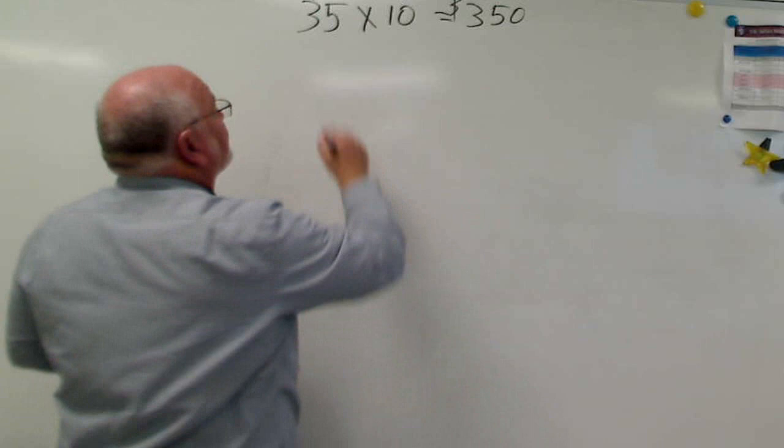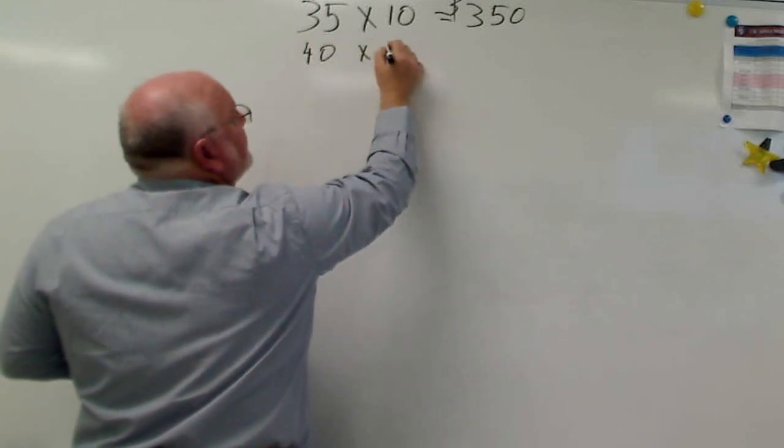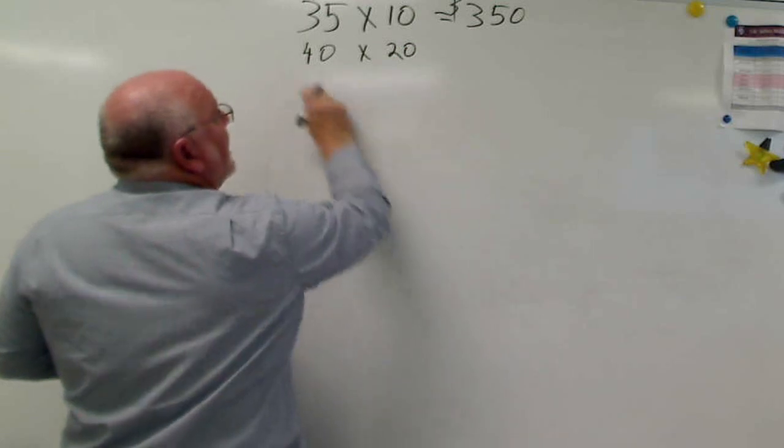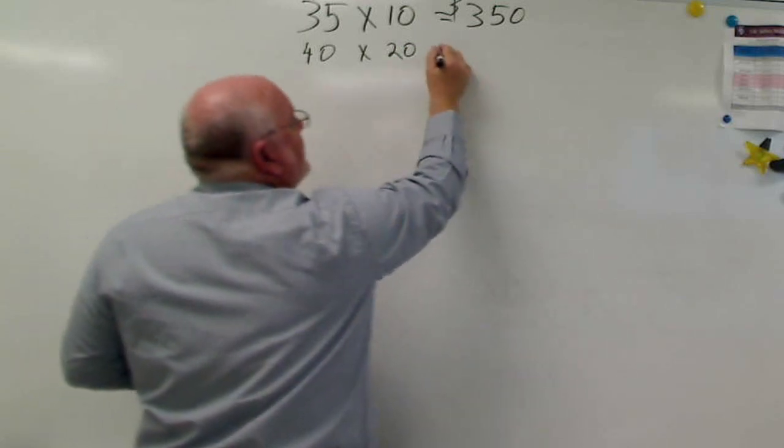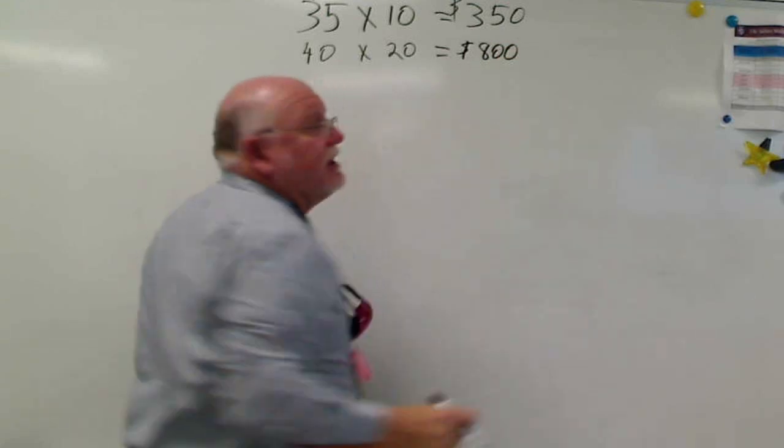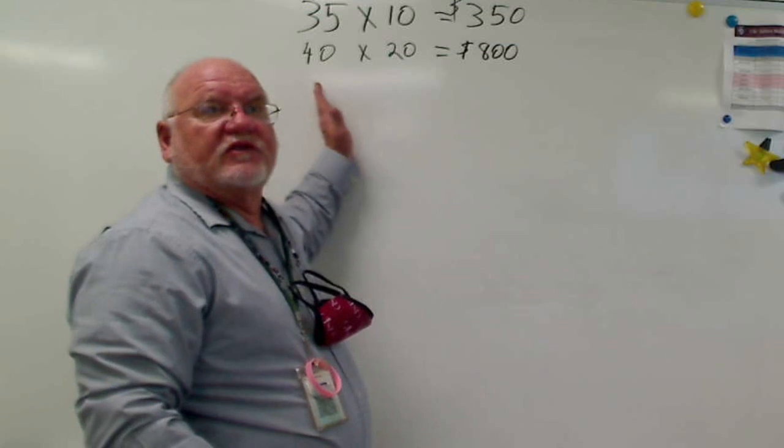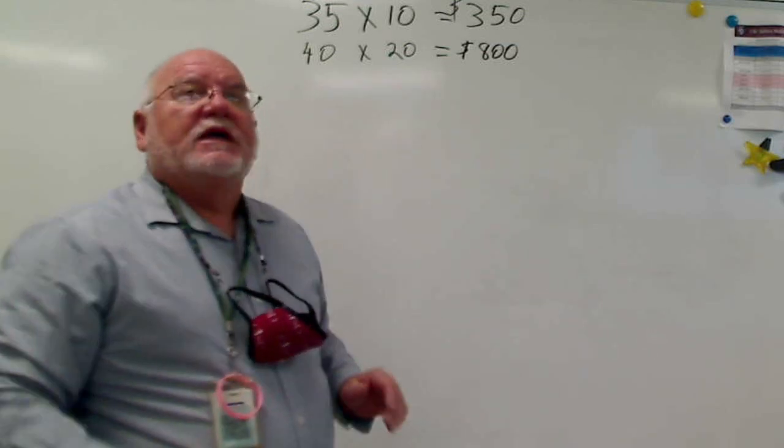Let's use another illustration. Let's say we work 40 hours at $20 an hour. And so it's 40 times 20, and that is $800. Now all that seems easy. Pretty easy. Hours times amount.